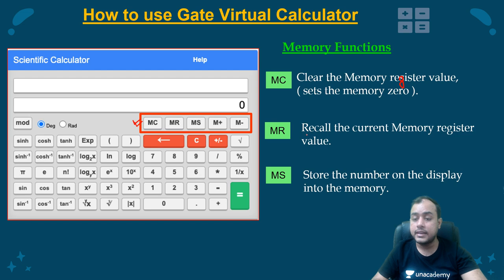MR, that is recall the current memory register value. Whatever data is there in the memory, if I want to recall it, if I want to reuse it, I will use the MR function. MS, that is store the number on display into memory. Whatever number is being displayed in this box, that can be stored into the memory.